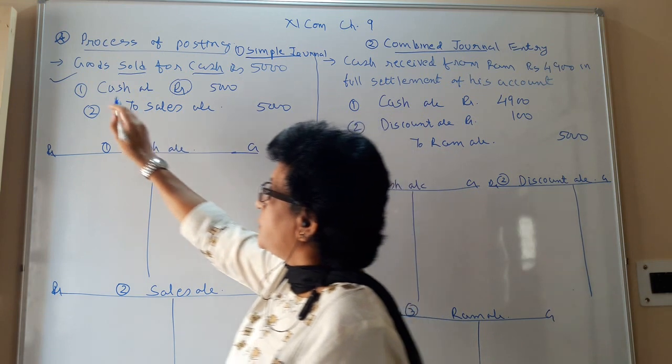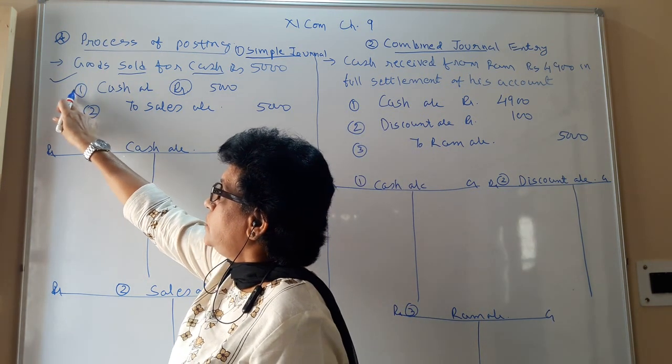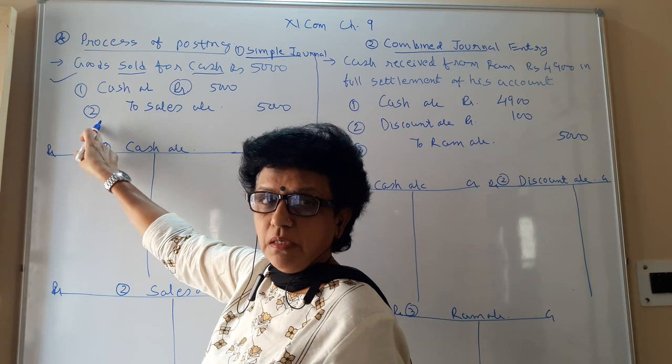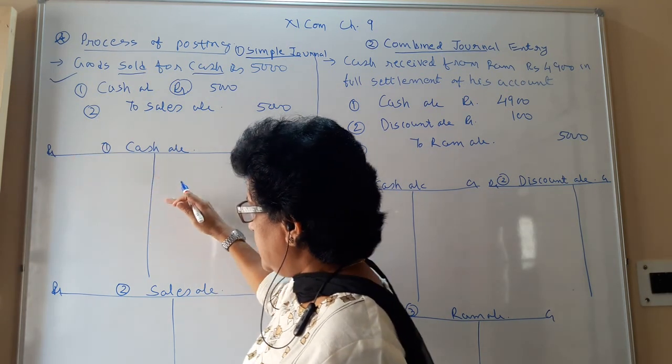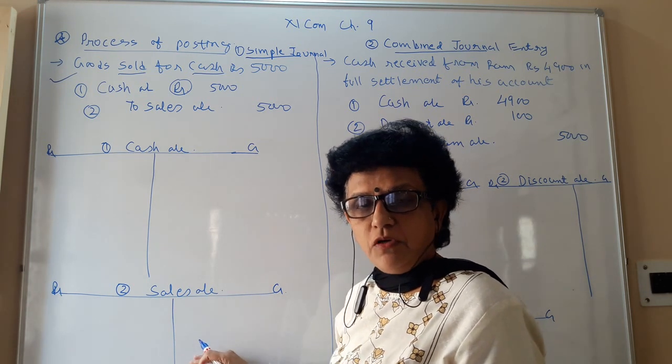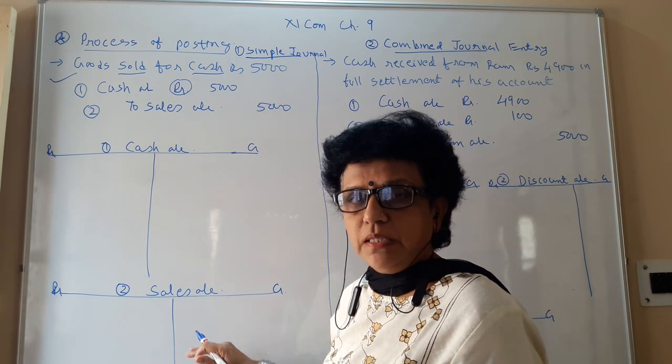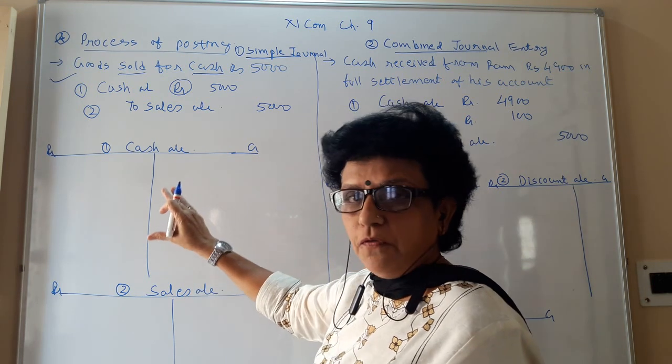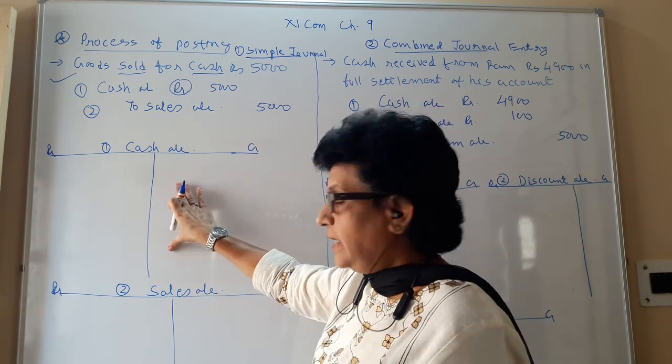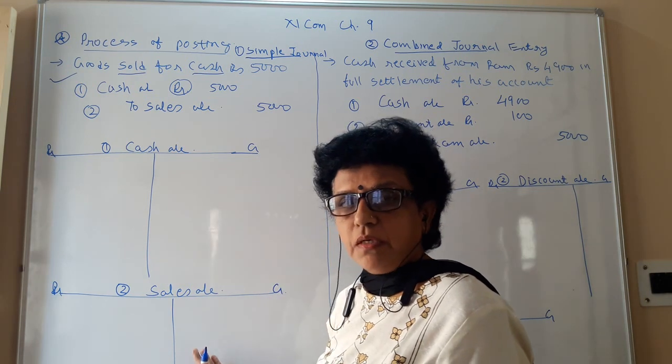In this journal, cash account you have to give number 1 and sales account number 2. It means you need two ledgers: one is cash, another is sales. The specimen of a ledger was already taught to you in the previous class. You have to follow the same procedure. Here I have done it simply for our understanding.